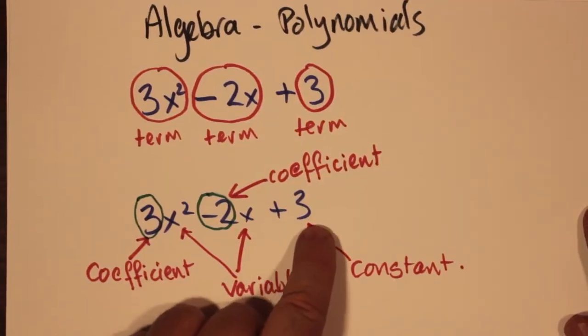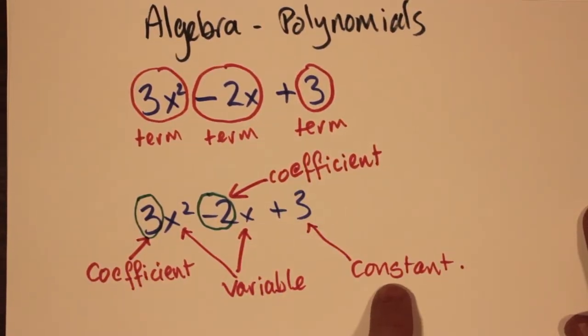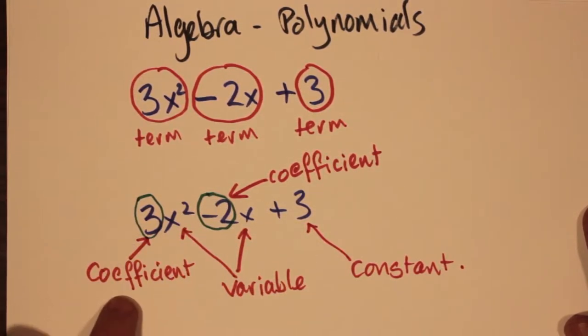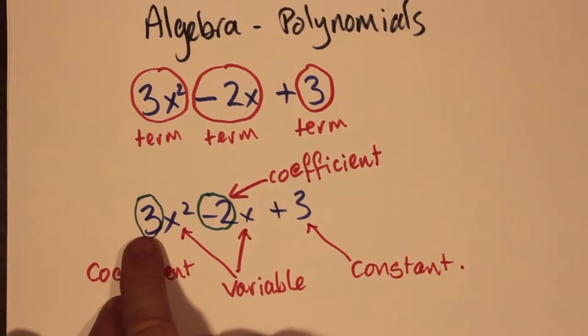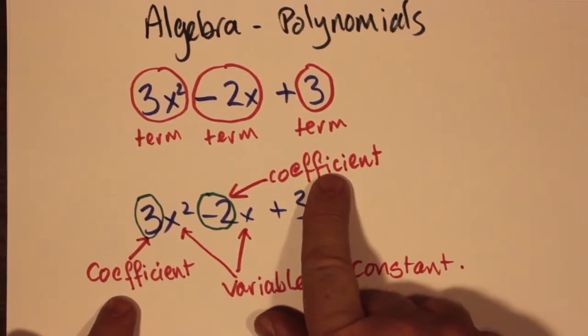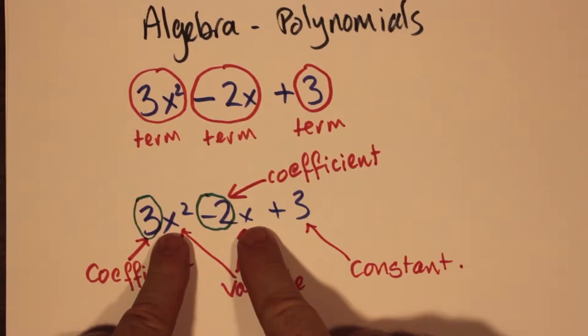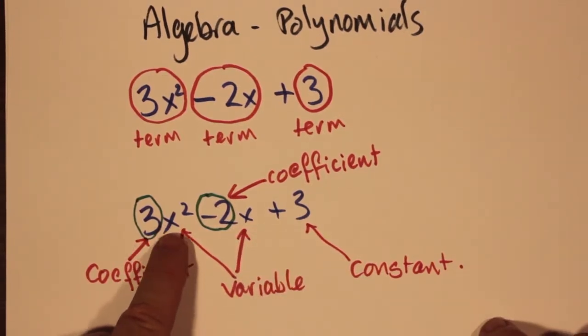What's a coefficient? If we look at the 3x² term, the 3 in the 3x² term is a coefficient. The -2 in the second term is also a coefficient, and the x² and the x are called variables.